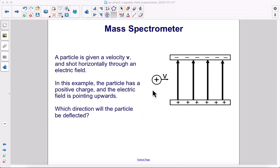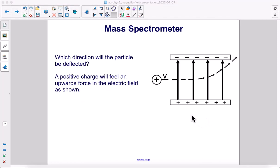A particle is given a velocity v and shot horizontally through an electric field. In this example, the particle has a positive charge and the electric field is pointing upwards. Which direction will the particle be deflected? A positive charge will feel an upwards force in this electric field, so it will deflect upwards.